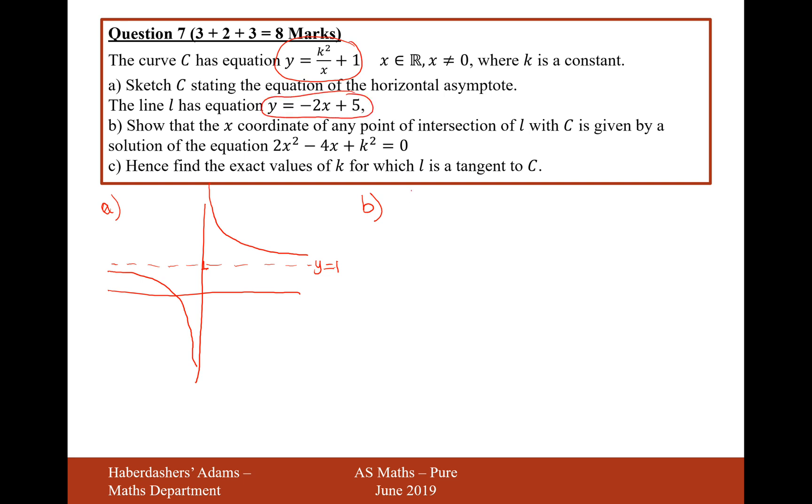So k squared over x plus 1 equals minus 2x plus 5. There's times x by both sides. Times x on both sides. If we times x here, that will just cancel out the x. We'd have to multiply by x here as well and then it'll be minus 2x squared plus 5x.